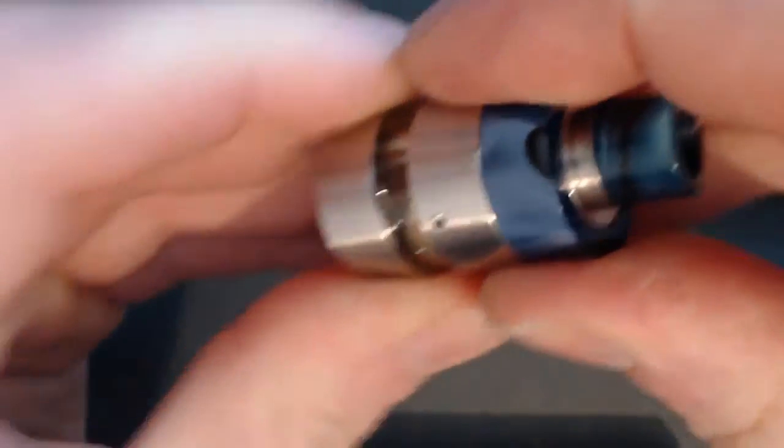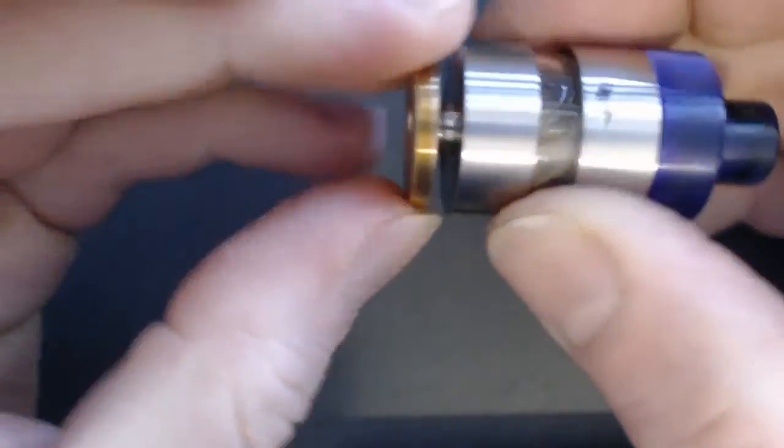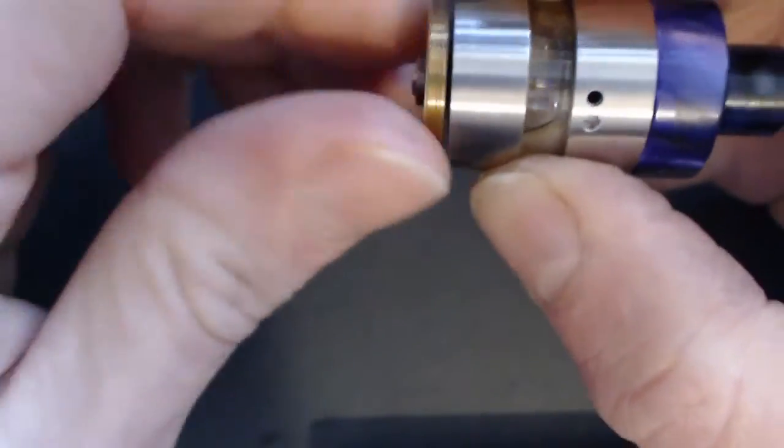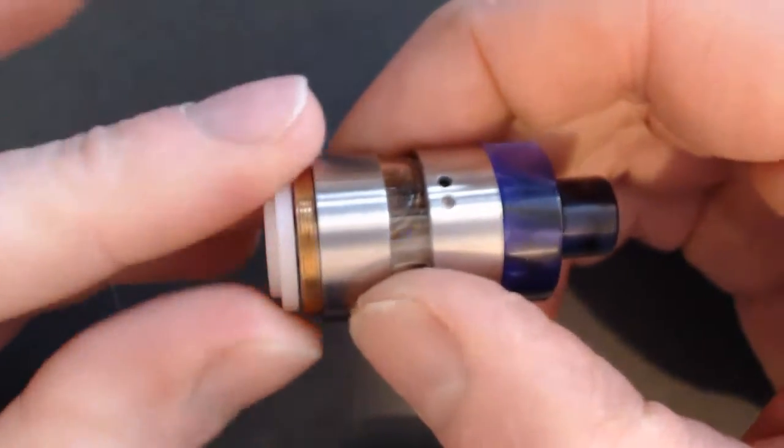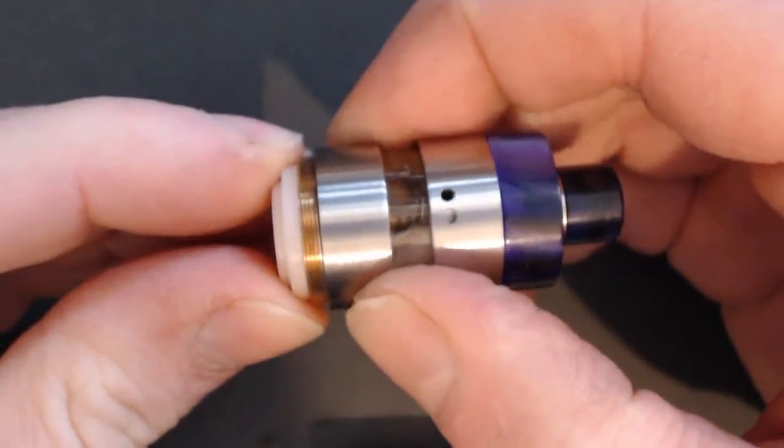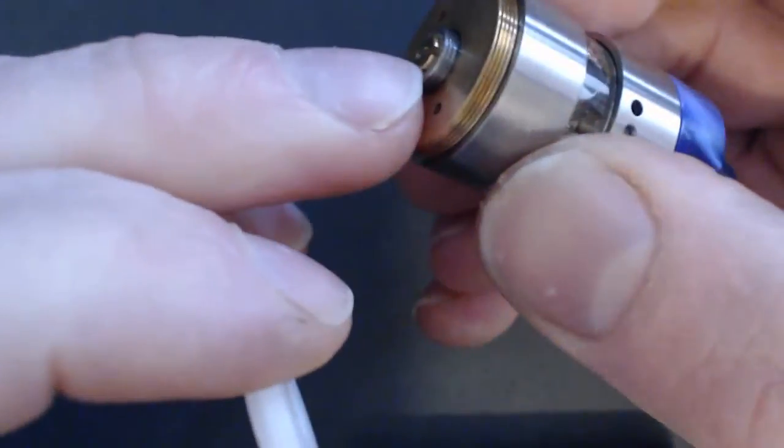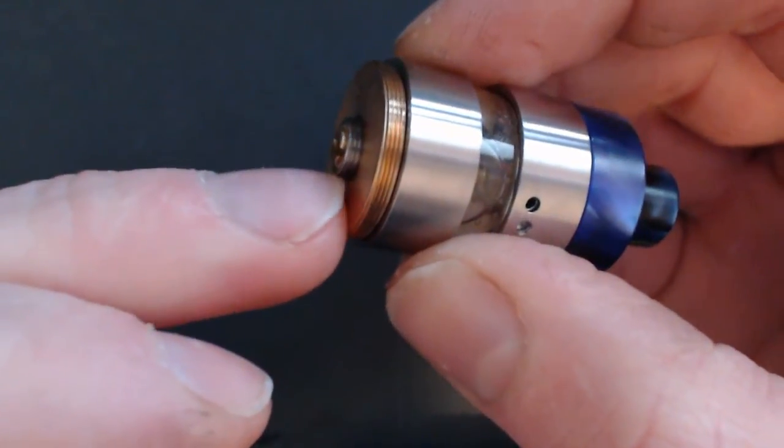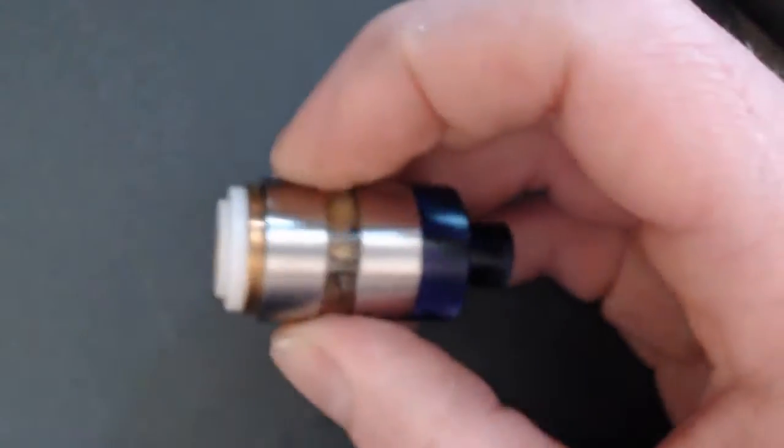So we just pop our top cap on. And what am I going to put it on? I'm actually going to put it on our Nebula mod in hybrid mode because I think that looks quite nice because it's quite a short little tank. Obviously when you're using a hybrid mode mod or hybrid mode kit, you need to make sure that pin protrudes past the external 510 thread, because if it doesn't you'll be in a whole world of problems.